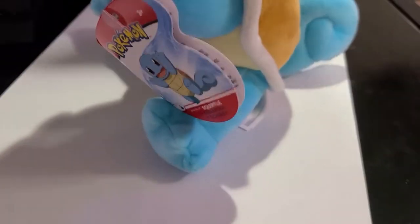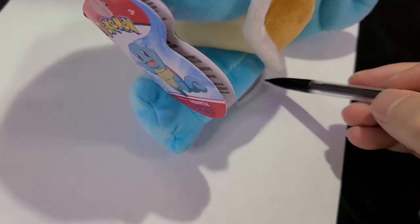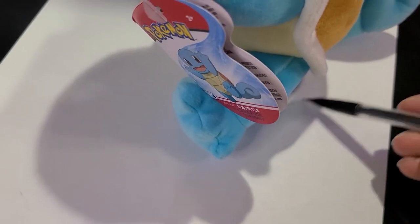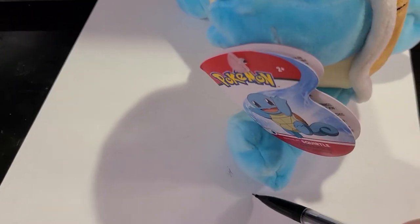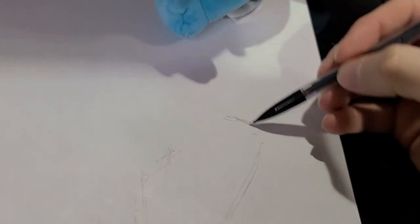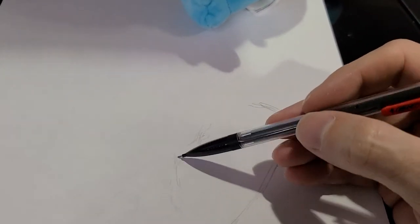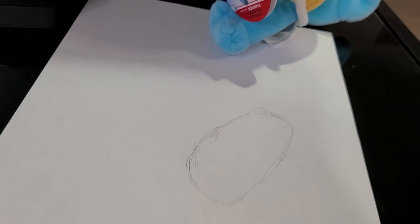Then you're gonna go back to your Squirtle plushie and say, hey those legs are about the exact size I want as well, and you're gonna repeat the process. Then connecting those dots, tracing around, there's a leg.